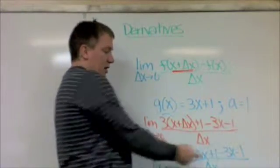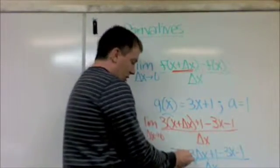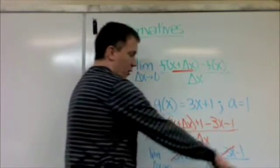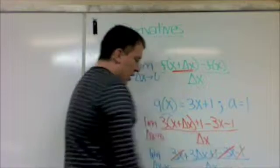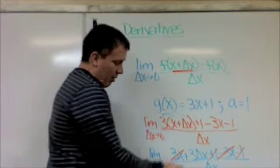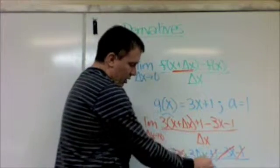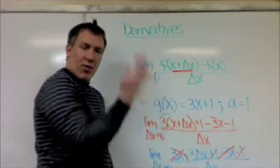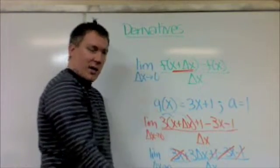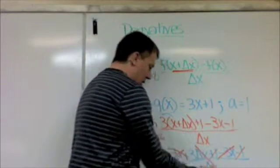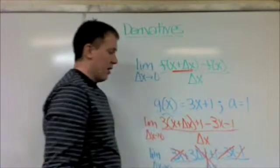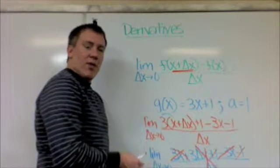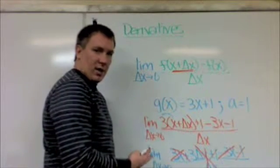But, I can cancel some things here. Here, I have 3x. There, I have minus 3x. So, 3x minus 3x. Those cancel. Plus 1, minus 1. Those cancel. And, now, all I have left on the top, you can see, is this 3 delta x. And, all I have left on the bottom is delta x. So, 3 delta x divided by delta x is just 3. So, my derivative or my slope here of the tangent line is 3.